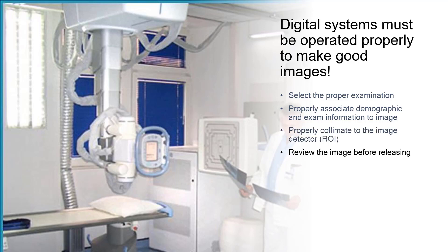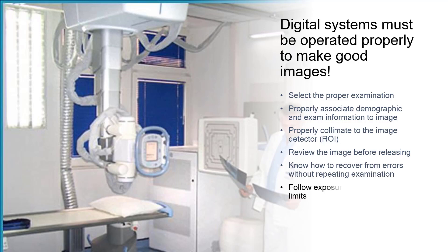Once we've acquired the image, we need to review the image before releasing it to the information system for the radiologist to pull up and interpret. When we are analyzing the image prior to releasing it, we must know how to recover errors without repeating examinations for the modality that we are using. One of the things to look for primarily is the exposure index number or exposure factors set up by the manufacturer. These will indicate that you have acquired the data within the proper ranges to create the image.